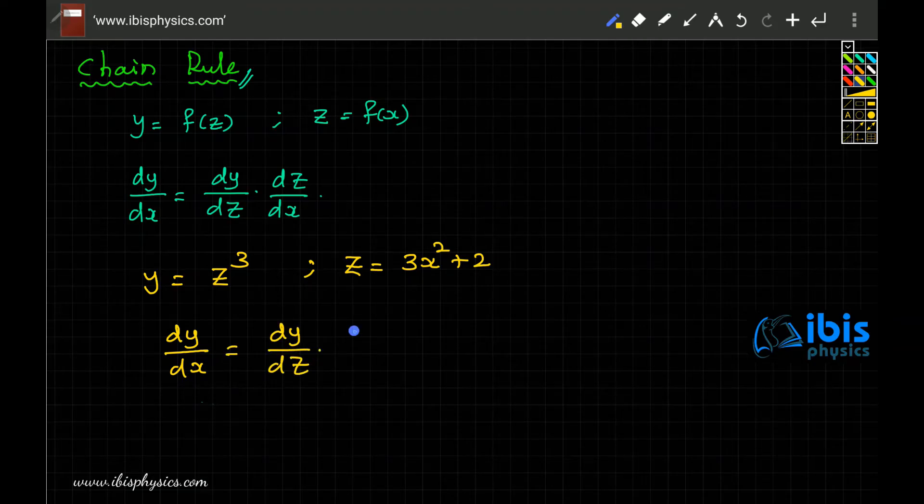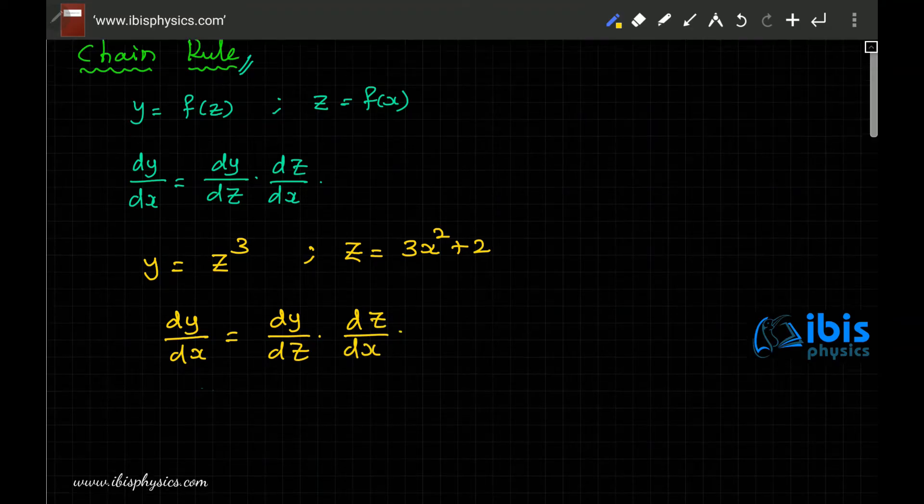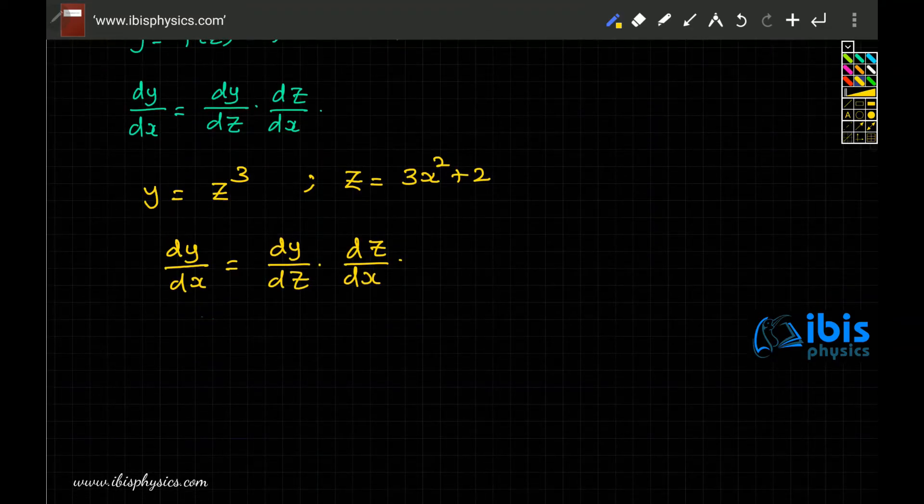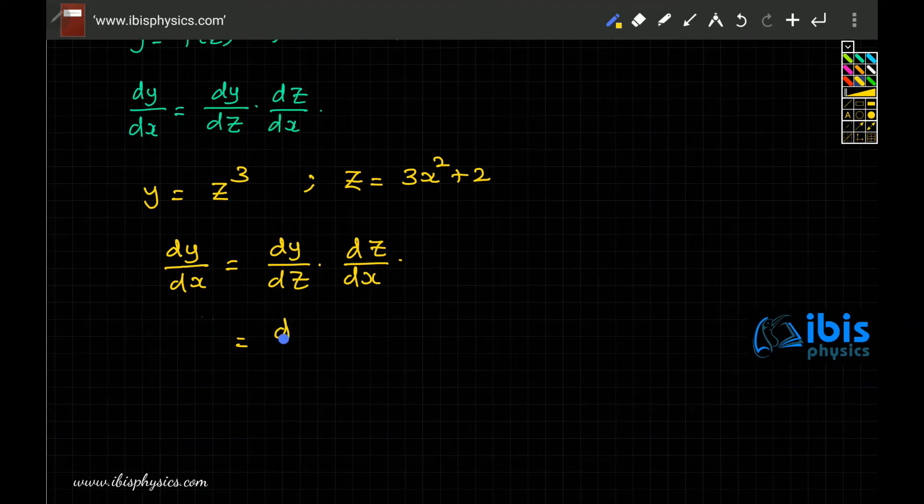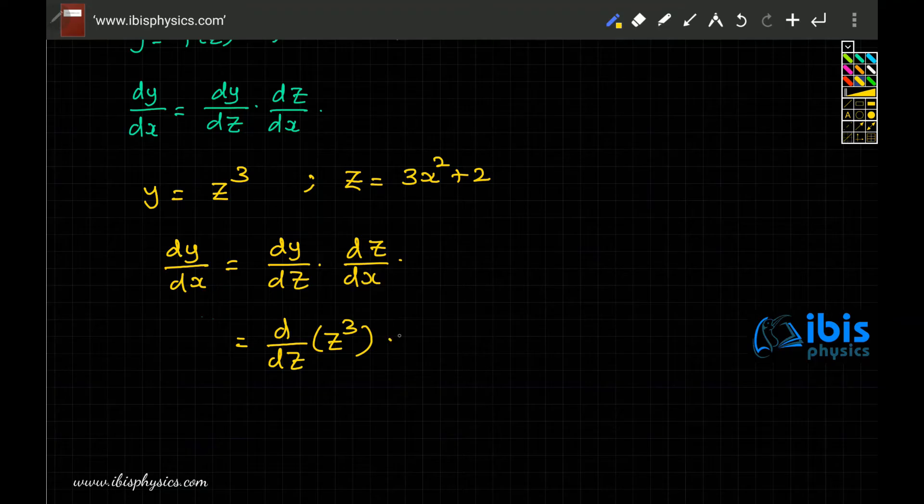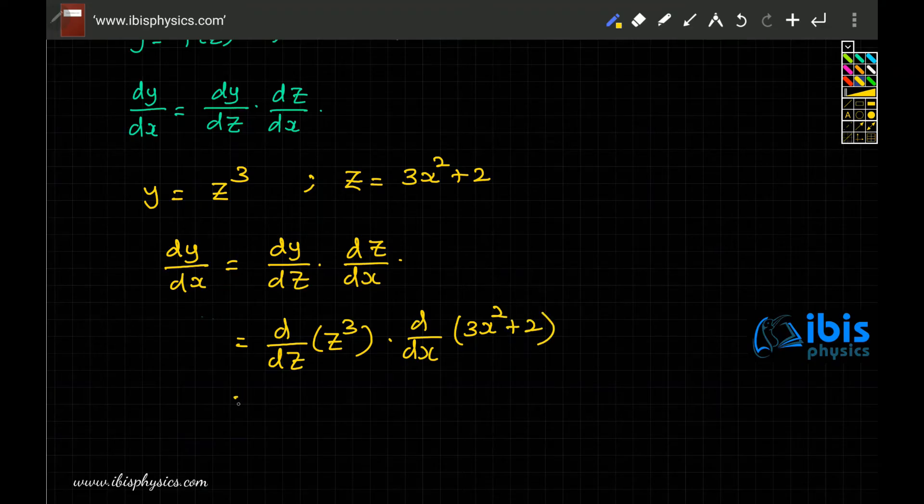What is dy/dz? d/dz of z³ into d/dx of z which is 3x² + 2. So d/dz of z³ is 3z².